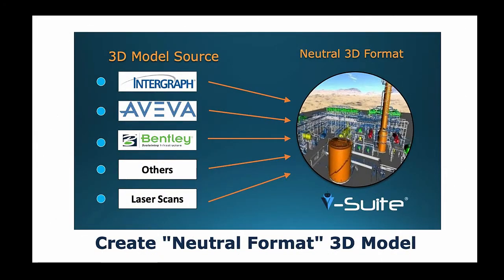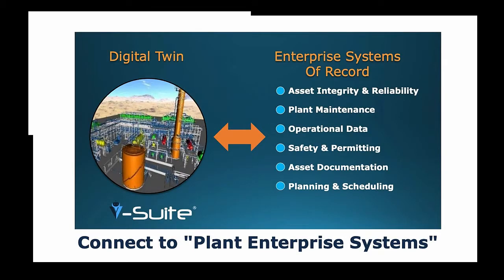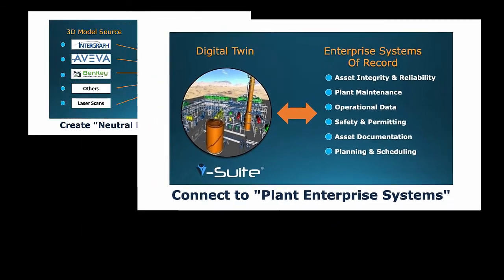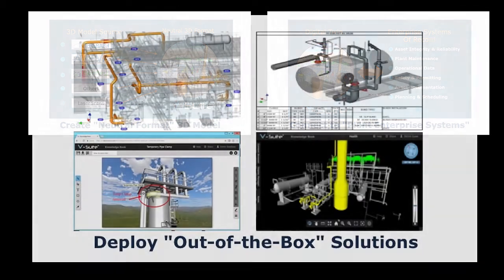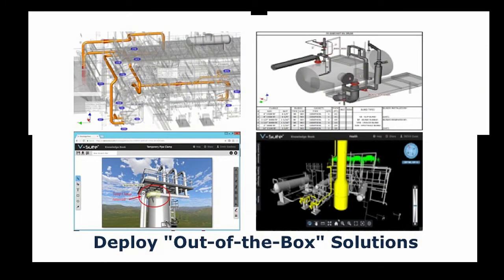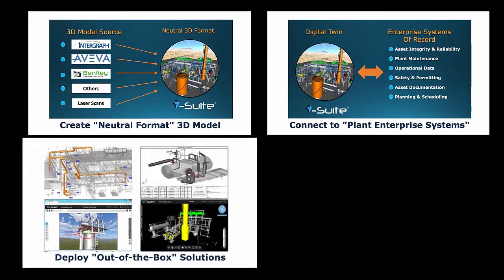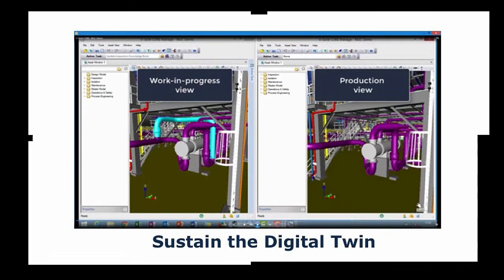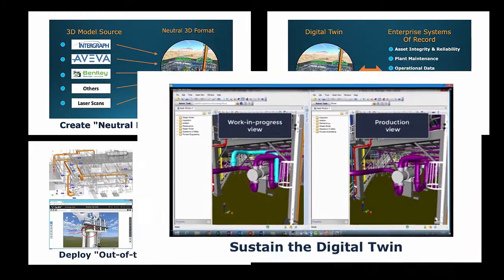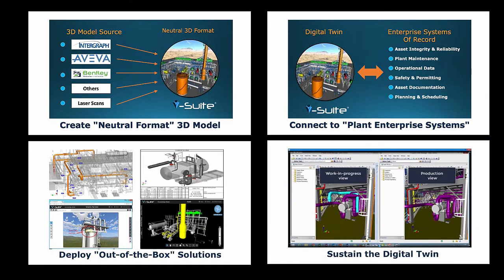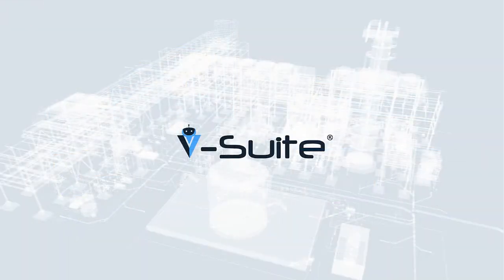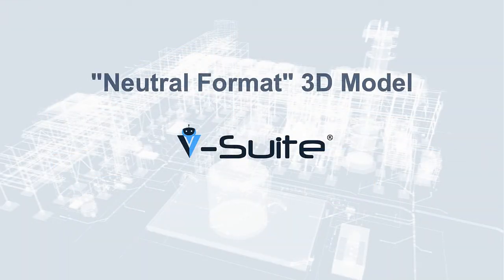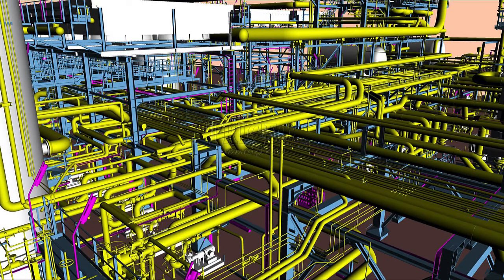A neutral format 3D model of the entire facility or asset that leverages data and analytics from the appropriate enterprise systems of record to deploy out-of-the-box solutions that drive improvements to workflows and decision-making, and finally provide a robust and efficient set of tools to sustain and evergreen the digital twin in parallel with changes to the facility. VisionEyes's vSuite software can be used to create a single, neutral-format active 3D model for the entire facility or plant.